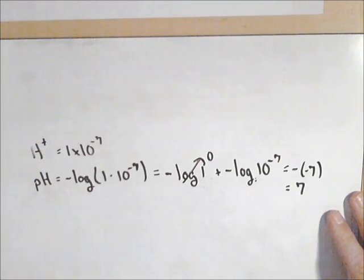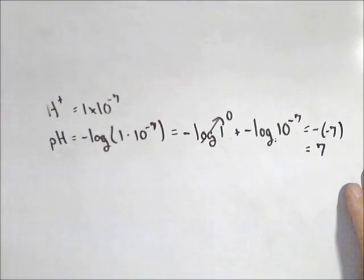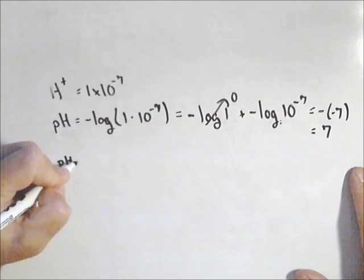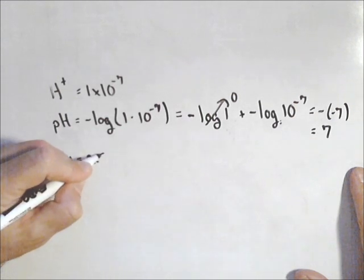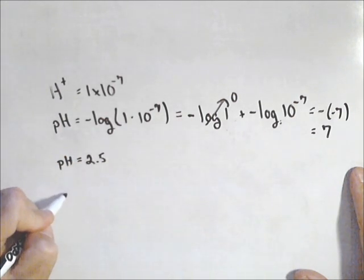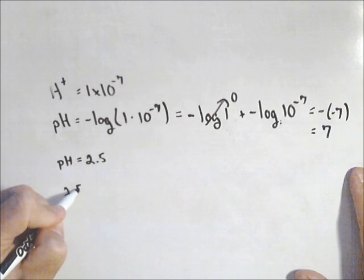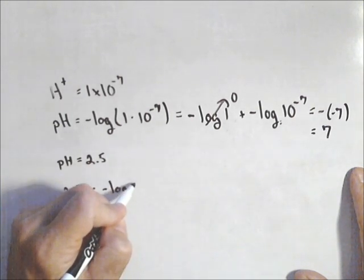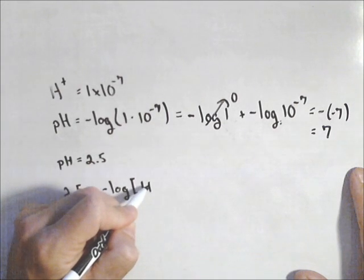So that's how we go in that direction. Now we can also go the direction where we're given the pH value. So say we're given a pH value of 2.5. Well then we'll set it equal to our equation, so 2.5 = -log(H+).